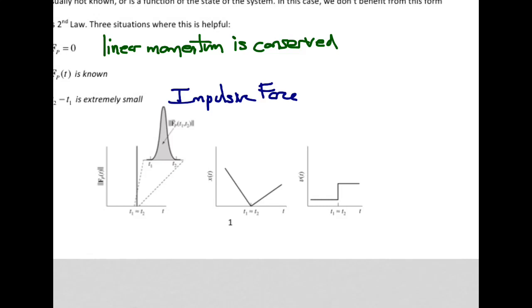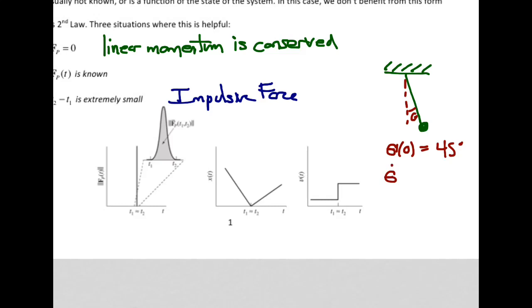That concept is really important because it gives us a tool to apply initial conditions of speed. For example, with the simple pendulum, every time we've solved it we've pulled the pendulum back to a particular point and let it go, oscillating back and forth — that's a position initial condition where theta at time 0 has some angle, say 45 degrees. But so far we haven't given it an initial speed, perhaps 20 radians per second. By having an impulse, this allows us the tools to do exactly that.